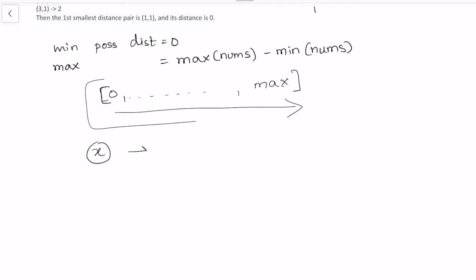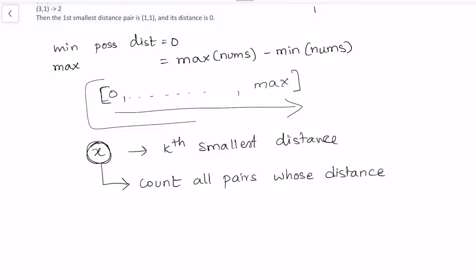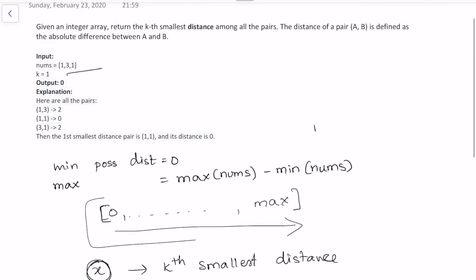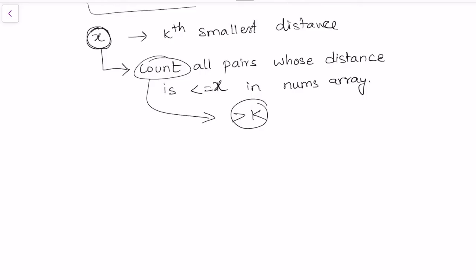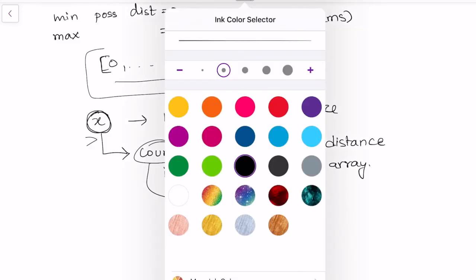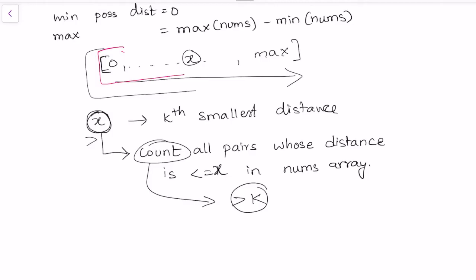While doing binary search, we assume some value x as our kth smallest distance. After assuming x as our answer, we find the count of all pairs whose distance is less than or equal to x. If this count is greater than k, our assumption is a little high, so we reduce our search space and search in the first half, which reduces our complexity.